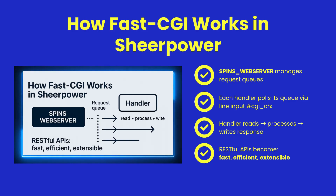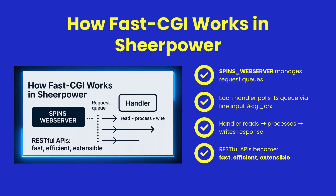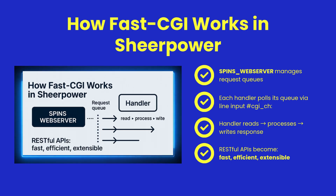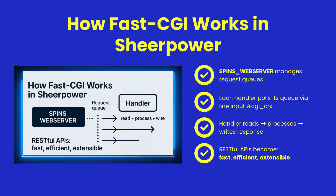In ShearPower, the spins underscore web server manages a queue for each handler. Your FastCGI handler pulls this queue, processes requests, and writes back responses. This queue-based design makes your REST endpoints fast and easy to extend without external frameworks.